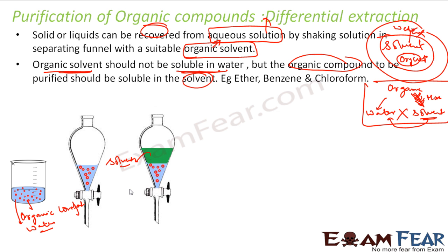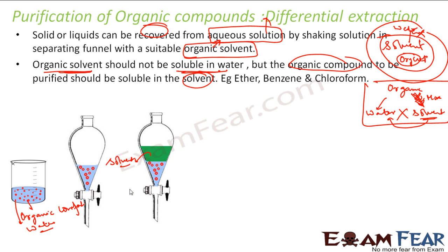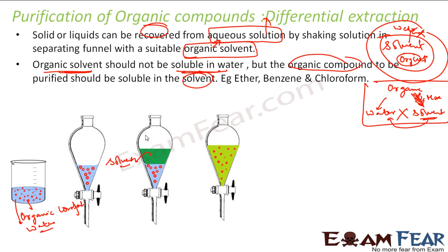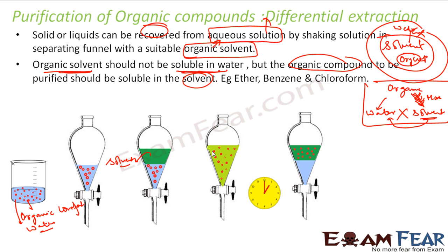Now what we do is we shake this separating funnel a lot. After the shaking, both get somehow mixed — they are scattered temporarily. Now you allow it to settle for some time. Since water is heavy, it will come down. Earlier the organic compound was stuck to water, but now the organic compound is stuck to solvent. Why? Because my organic compound loves solvent more than water — that is the kind of solvent I chose.